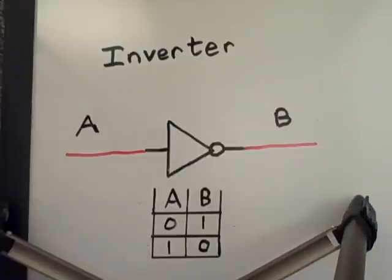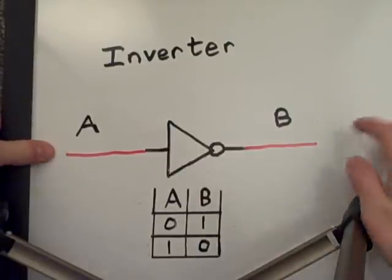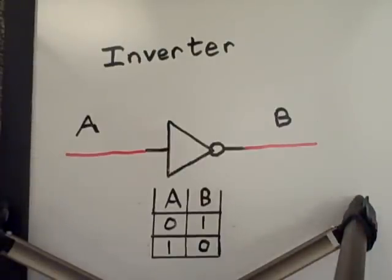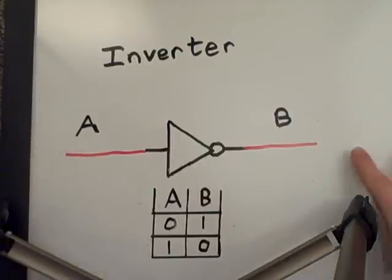This one is an inverter gate. As you can see, it only has one input and one output. All it does, just like the name implies, is invert the signal. When A is zero, B is going to be one. And when A is one, B is going to be zero.